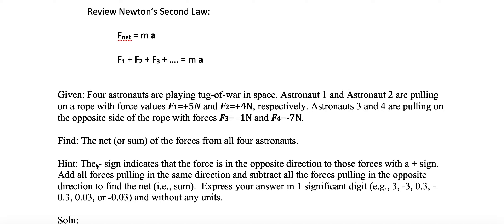There's a hint here. Notice that F3 and F4 have negative signs. The negative sign indicates the force is in the opposite direction to those with a positive sign. So F1 and F2 are positive — going in one direction — and F3 and F4 are negative, going in the opposite direction. The hint says to add up all the forces pulling in the same direction and subtract all the forces pulling in the opposite direction to find the net sum.